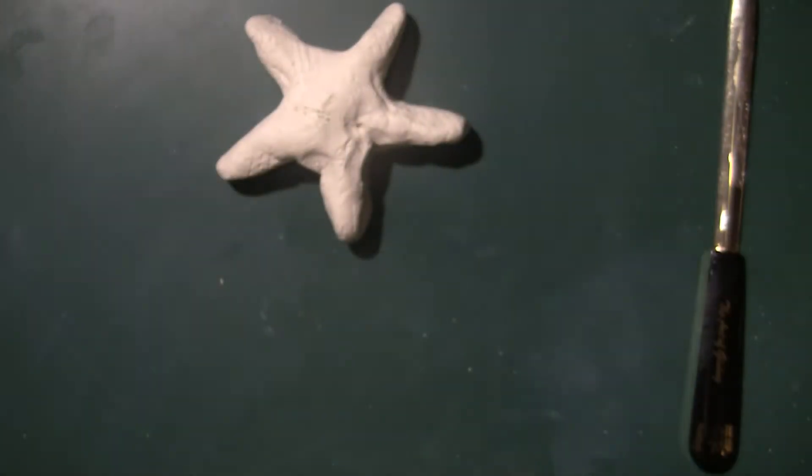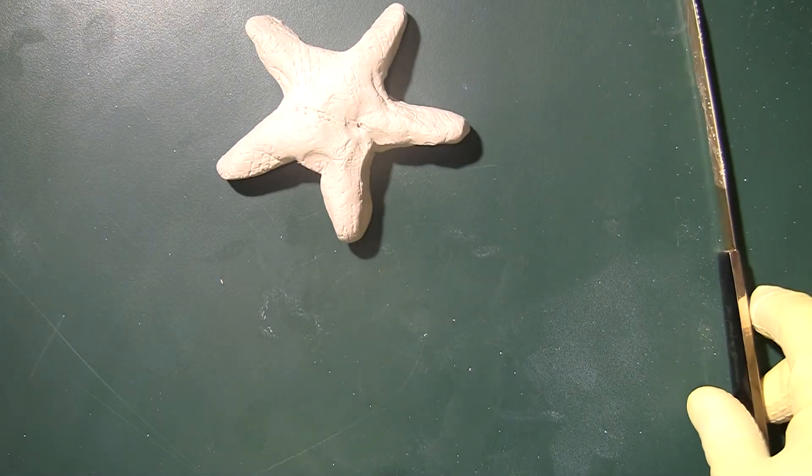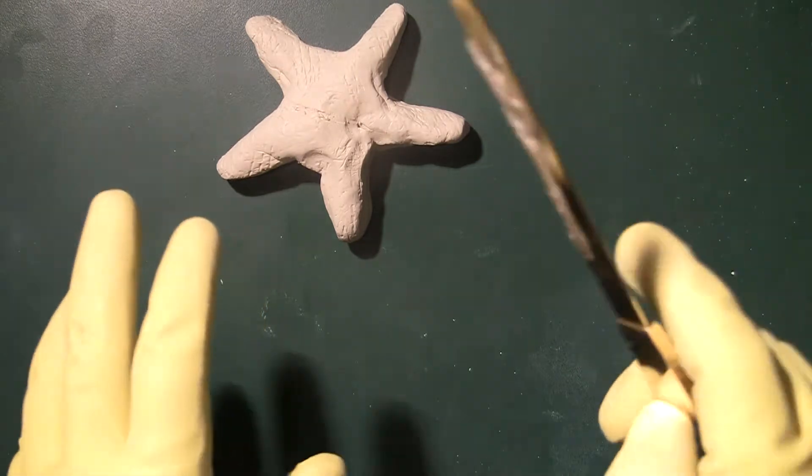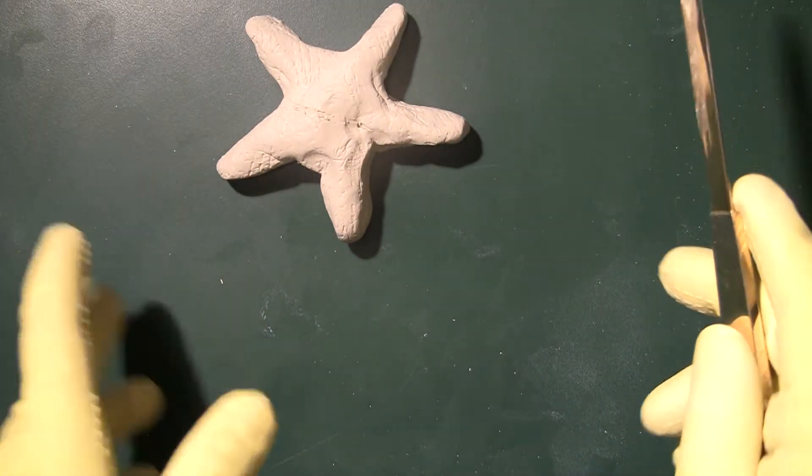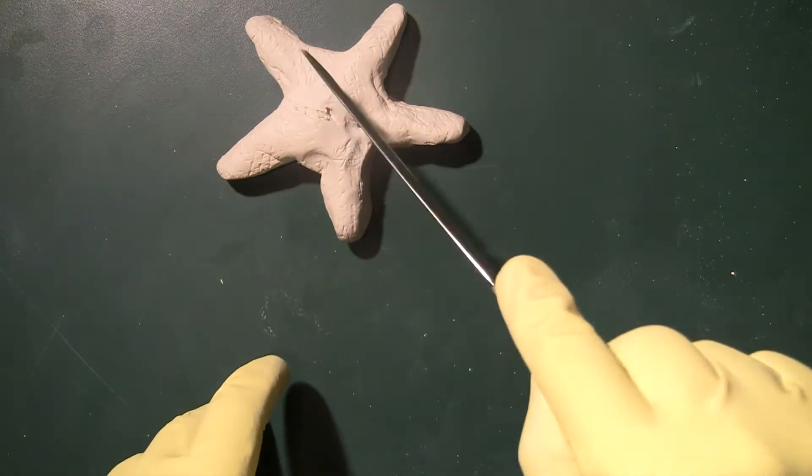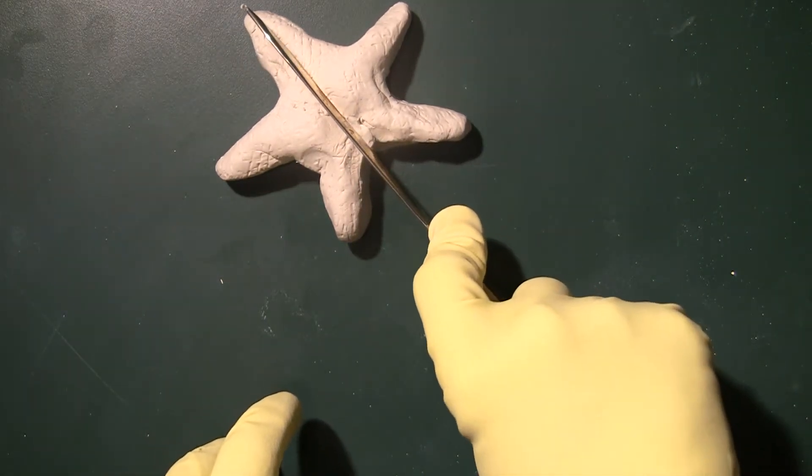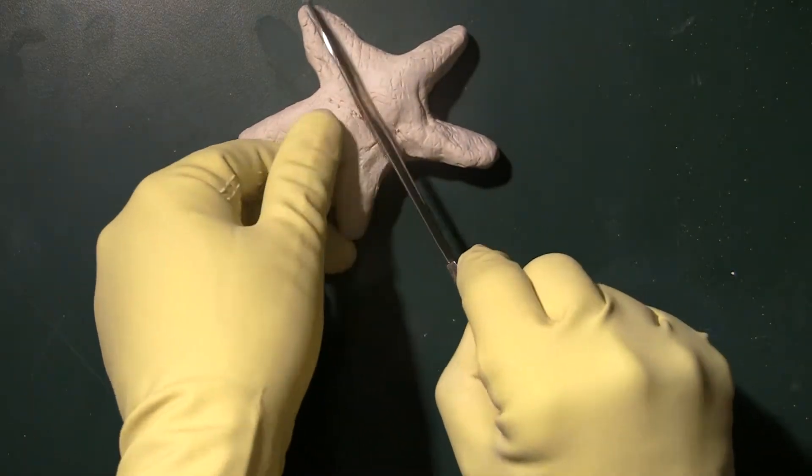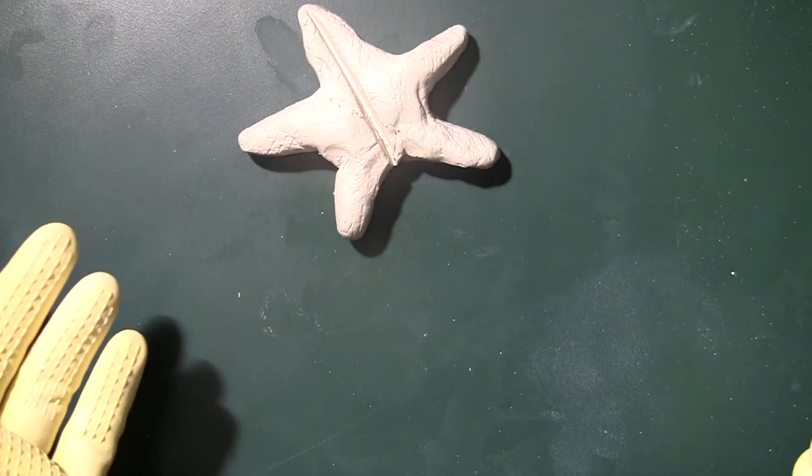Now this shows radial symmetry, meaning that the animal can be divided into two equal halves when cut all along the radius. All along the radius if I cut it into two equal halves, this is a kind of symmetry I should call radial symmetry.